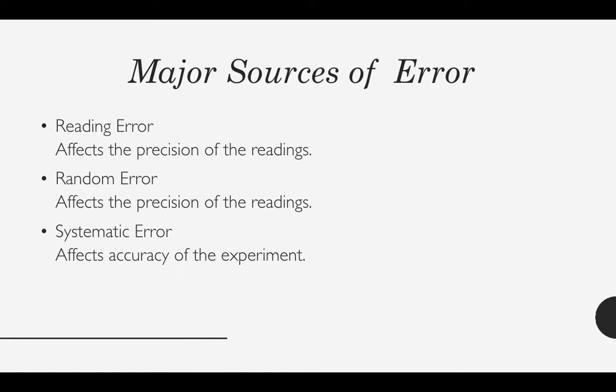Moving on to major sources of error. The major sources of error are reading error, random error and systematic error. Reading error refers to the uncertainties caused by the limitations of our measuring equipment and our own limitations at the time of measurement. This does not refer to any mistakes you make while taking the measurement. Rather, it refers to the uncertainty inherent to the measurement and your own ability to minimize this uncertainty. A reading error affects the precision of the experiment.